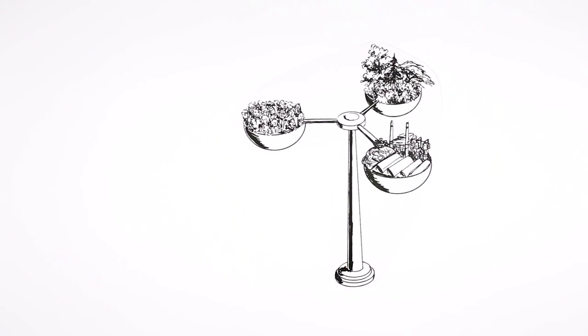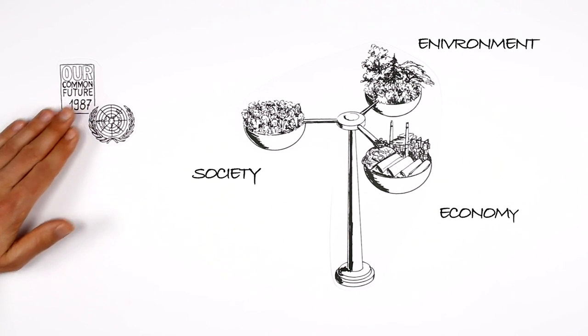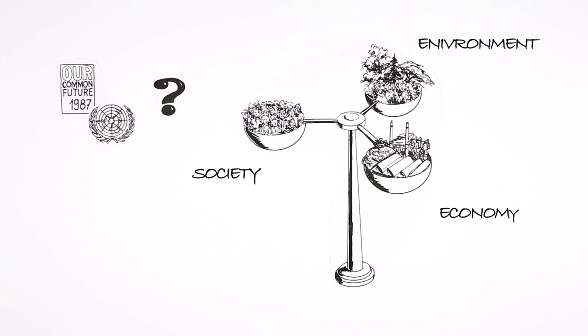This requires taking into account the three dimensions of sustainability: economic, environmental and social. This is how the term was defined in 1987 by the Brundtland Commission in the report, Our Common Future. But what has happened since then and where do we go from here?